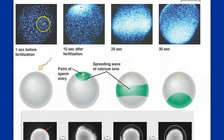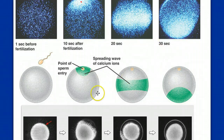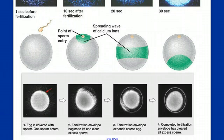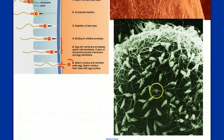In these images, one second before fertilization the calcium ion distribution is low. Ten seconds after fertilization, we see an increase in calcium ions at the point of fertilization, and that wave flows across the membrane. This results in the fertilization envelope that seals off the egg from any other sperm entering — even as many sperm are attacking the egg simultaneously.